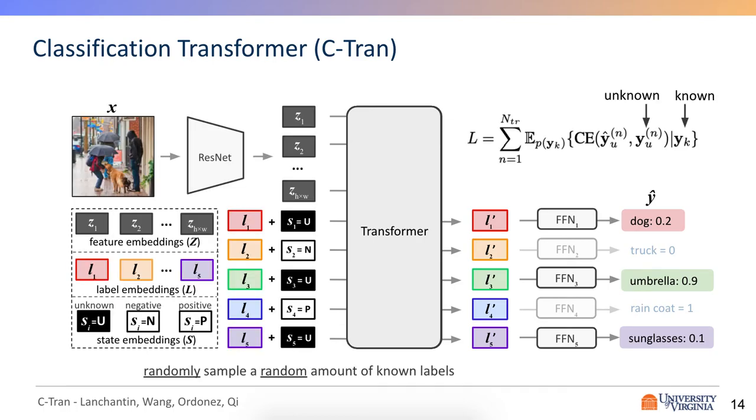So during inference, we do want to model all possible arbitrary subsets of known labels. So to do this, we train the model by randomly sampling a random amount of labels as known during training, which are set to their ground truth state embedding value, and then we predict the remaining unknown labels. So during each training iteration, a new subset of the labels are masked out and predicted given the image and the known labels.